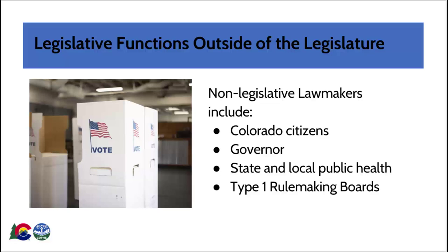Examples of successful ballot initiatives passed by Colorado voters include tobacco taxes, medical and recreational marijuana, and industrial hemp. Another successful initiative, known as the TABOR Amendment, modified the Colorado Constitution to require voter approval to collect any new taxes. This amendment prohibits legislators from independently enacting new taxes via legislation. However, the General Assembly enacts laws that impose fees for particular services. The Governor is authorized by state law, known as the Disaster Emergency Act, to enact executive orders.